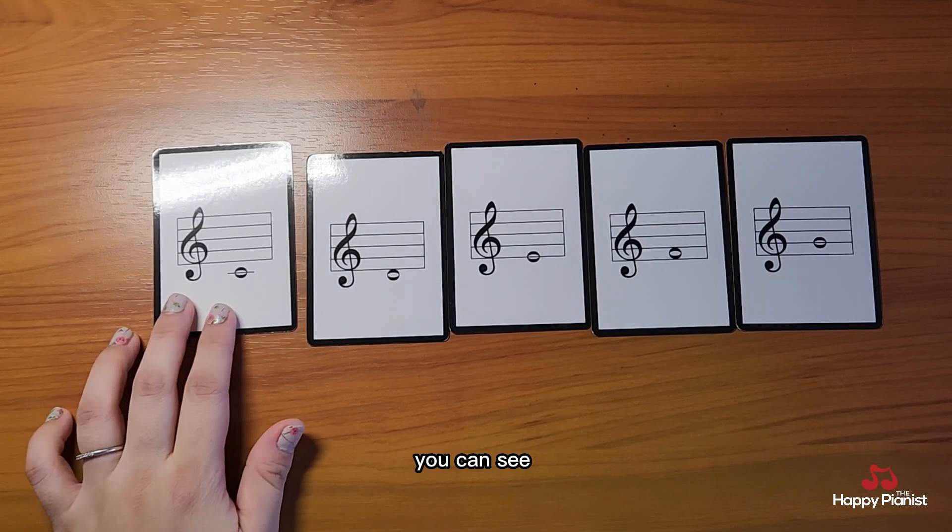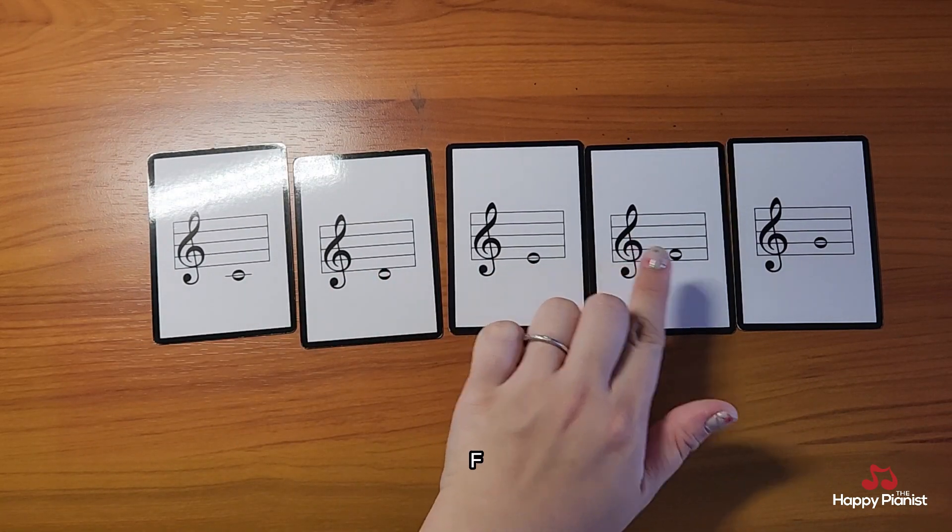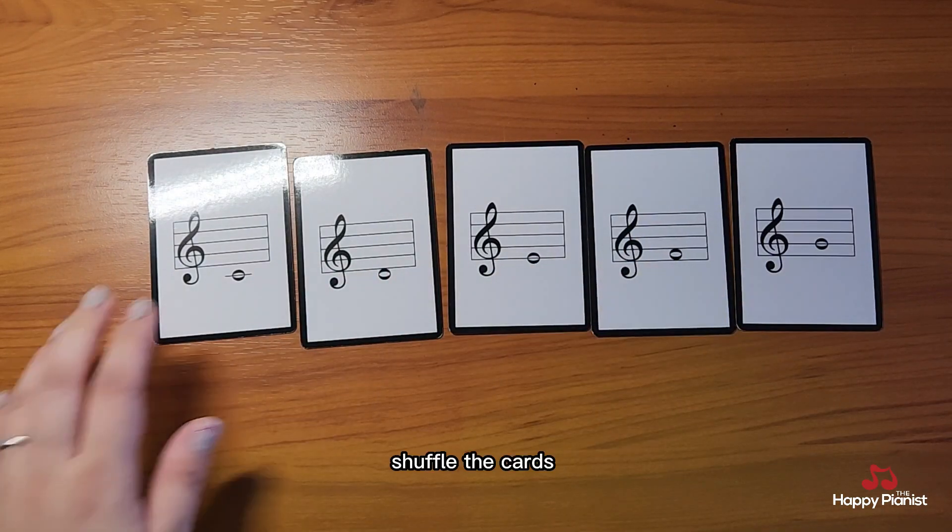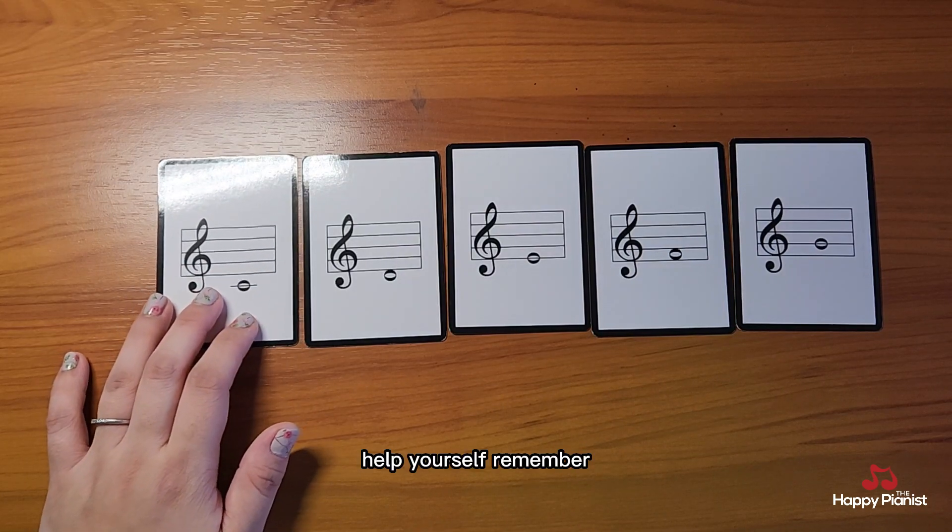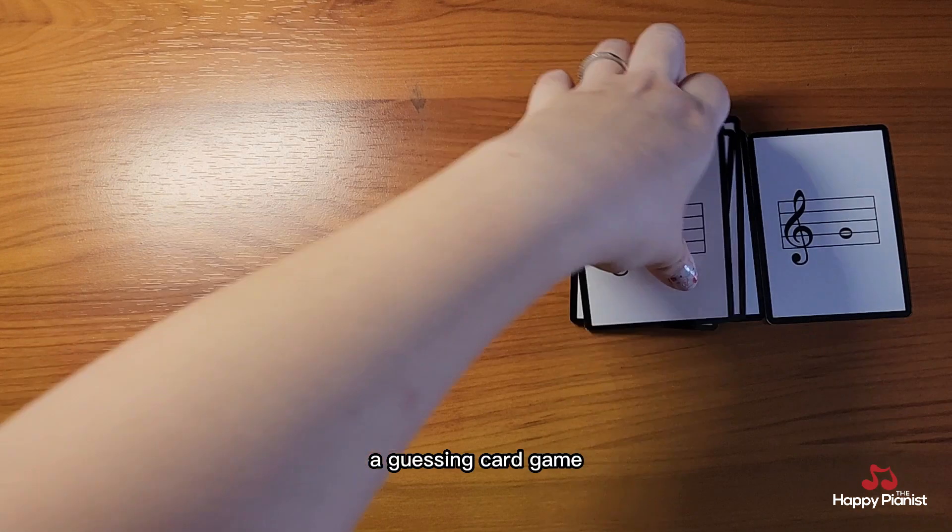Using the happy music cards, you can see this is C, D, E, F, G. Shuffle the cards and help yourself remember by playing a guessing card game.